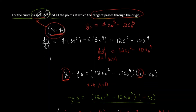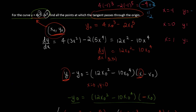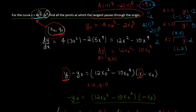Now we compute the corresponding y-values. For x₀ = -1: y = 4(-1)³ - 2(-1)⁵ = -4 + 2 = -2, giving point (-1, -2). For x₀ = 0: y = 0, giving point (0, 0), which is the origin itself. For x₀ = 1: y = 4(1)³ - 2(1)⁵ = 4 - 2 = 2, giving point (1, 2). These are the three points where tangents to the curve pass through the origin.